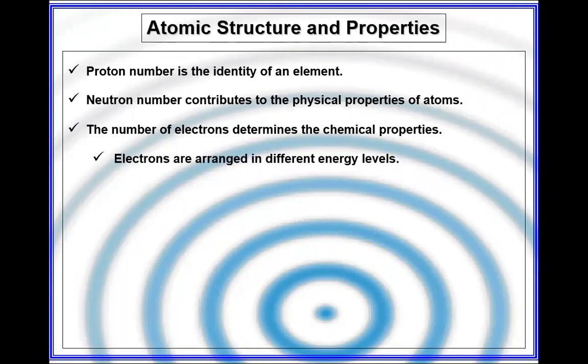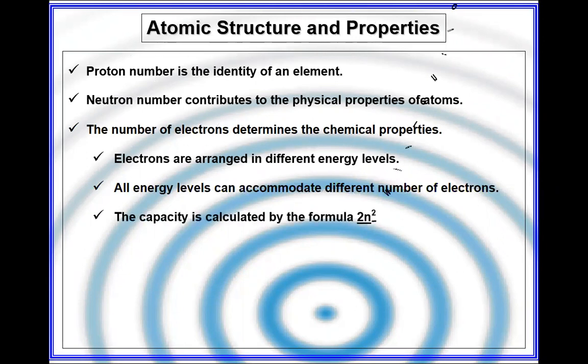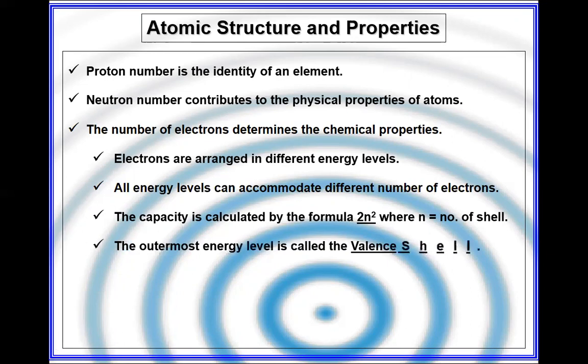Electrons are arranged in different energy levels. Energy levels are circles in which electrons are revolving. They calculate the capacity with the formula 2n².